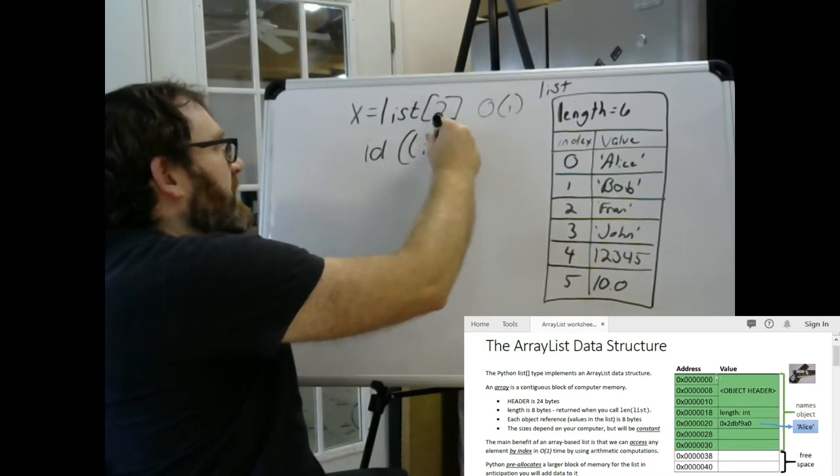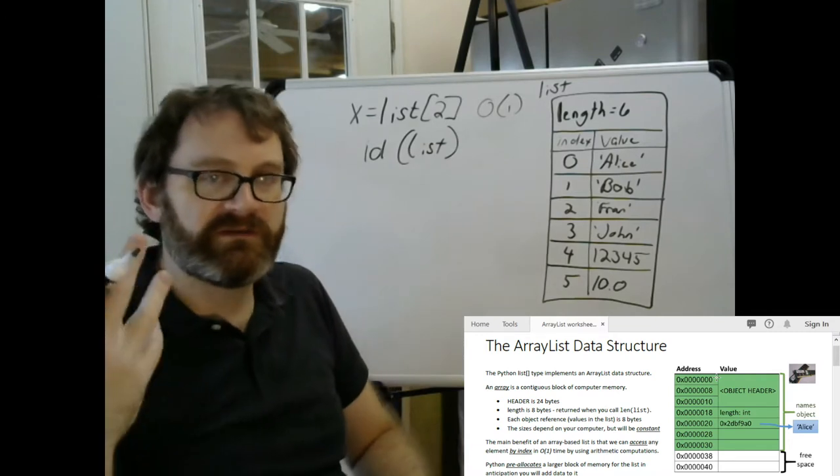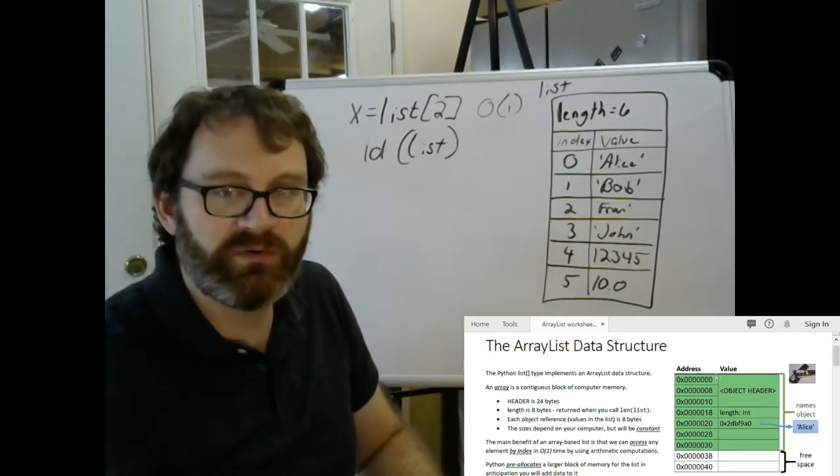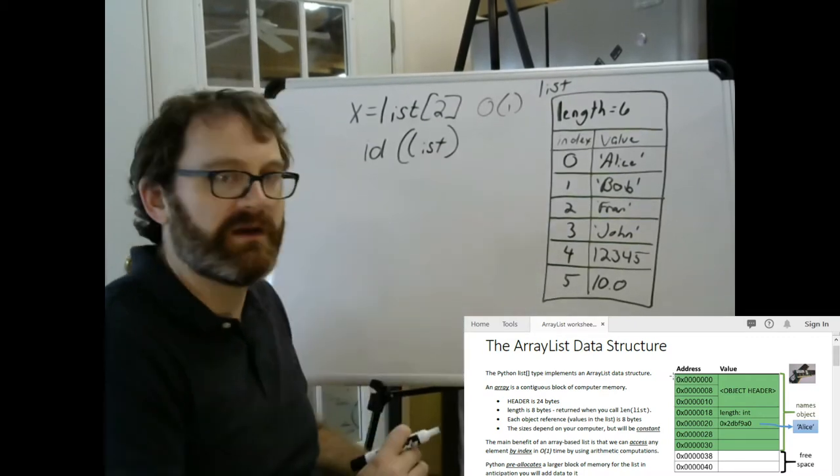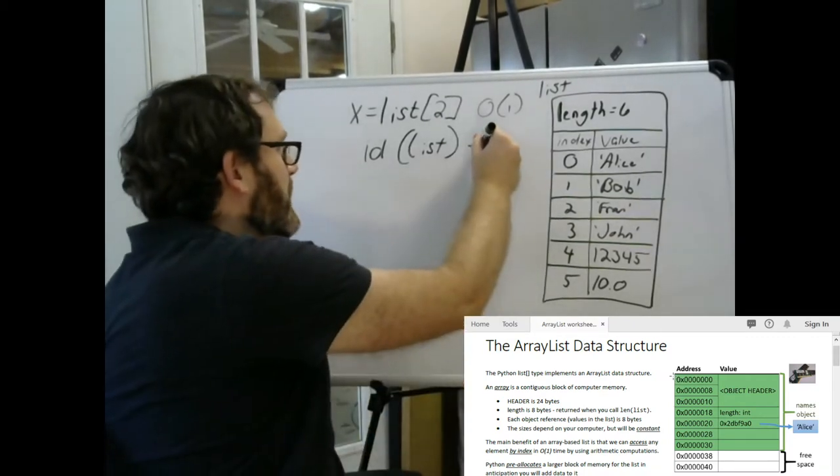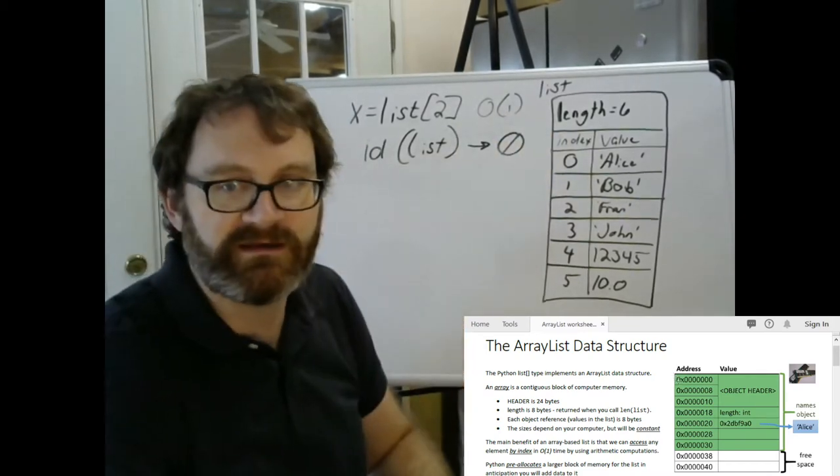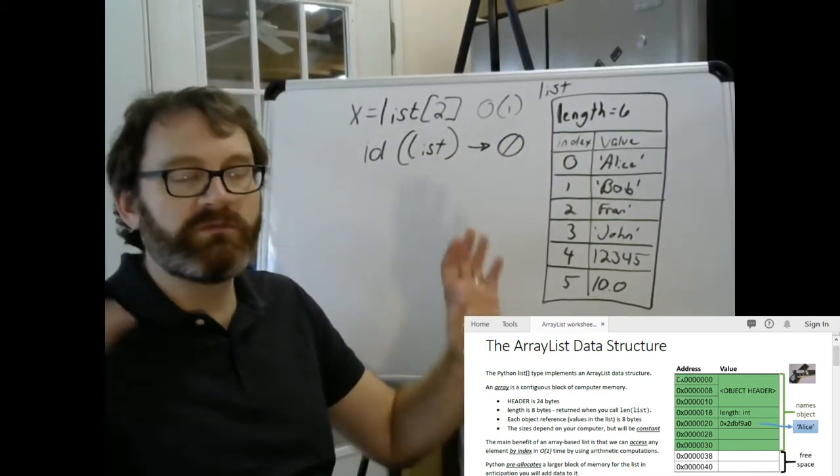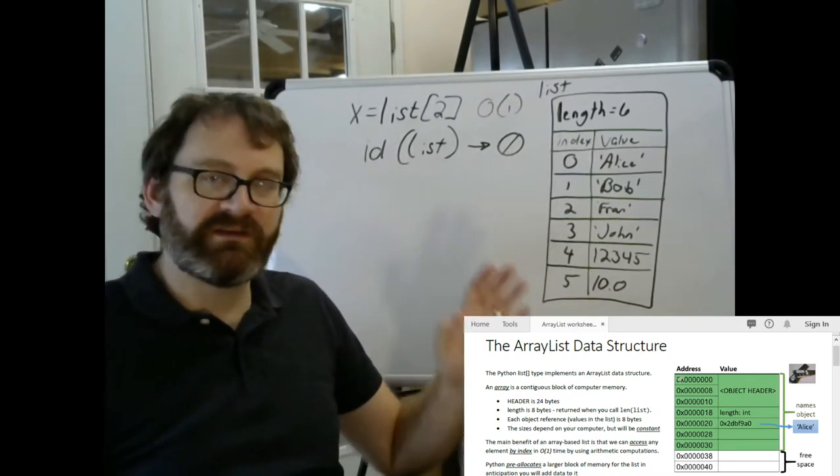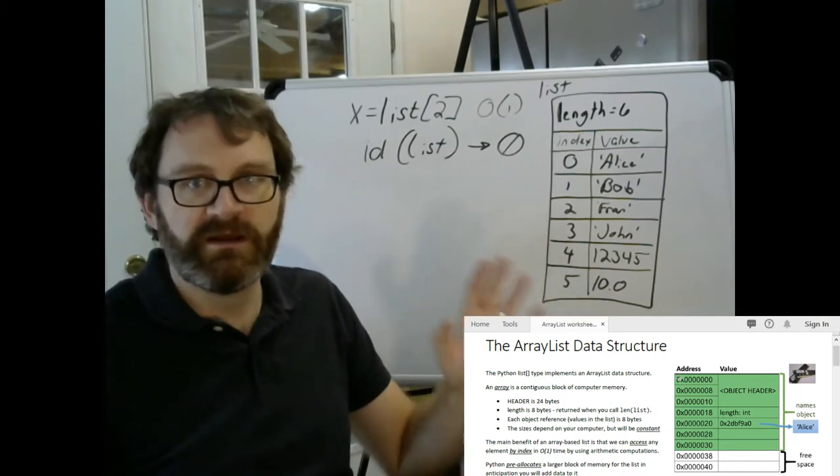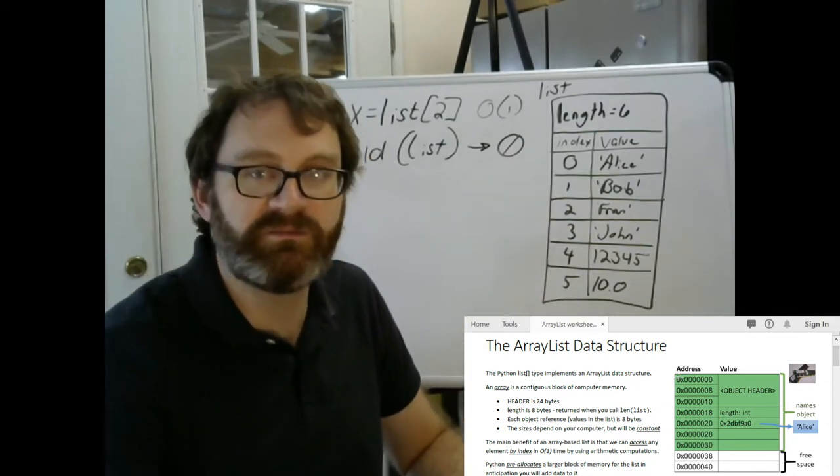So if I call ID of list, that's going to give us a memory address that points to the beginning here. It points to the beginning. So ID gives me back, let's say, for simplicity's sake, I put this at address zero. It could be something else. It's totally fine. It could be five million. It could be 724,000, whatever it is. It's a number. That's the address in memory where this list begins.